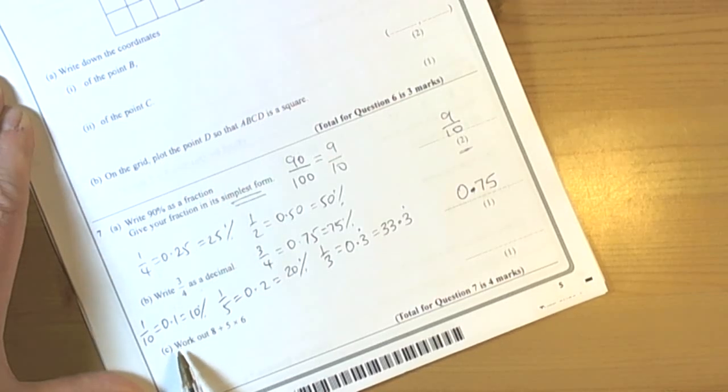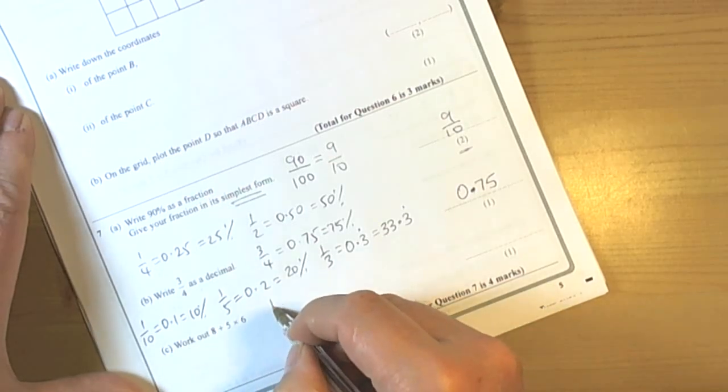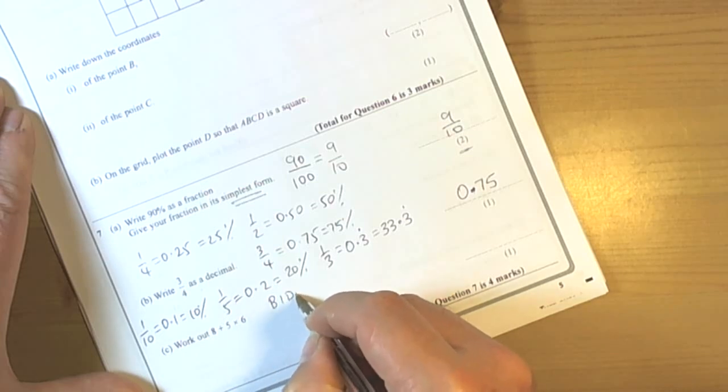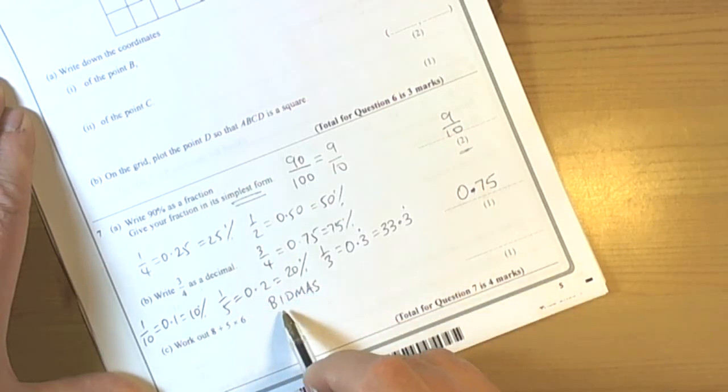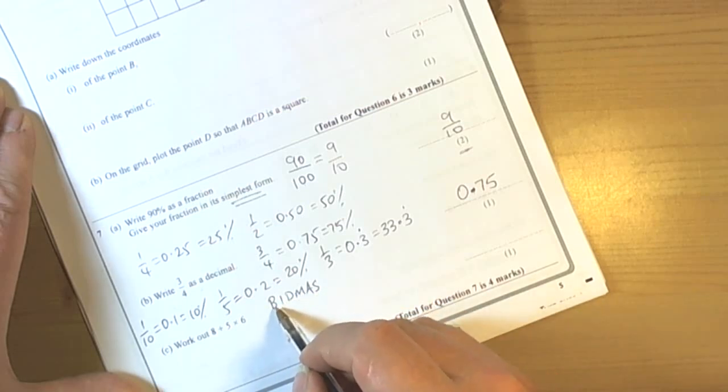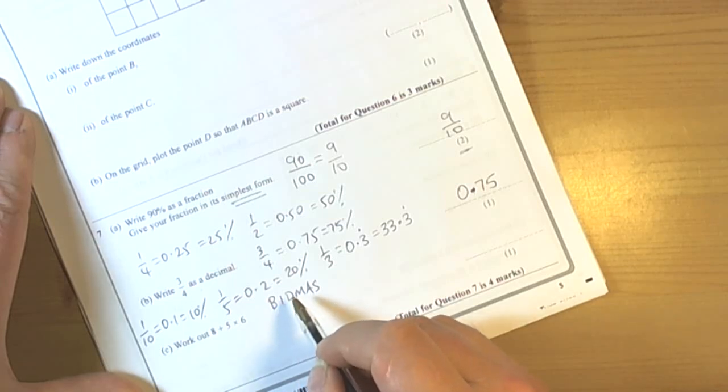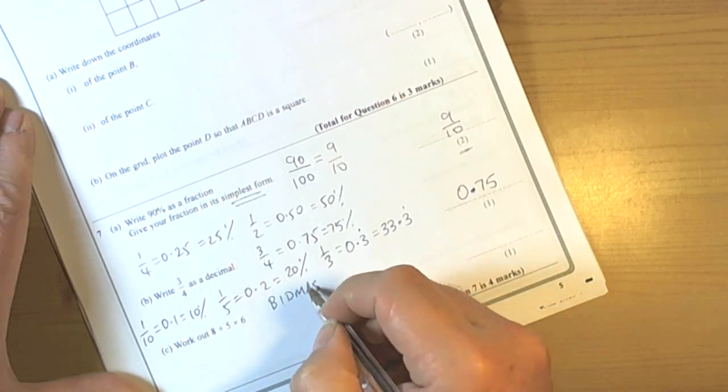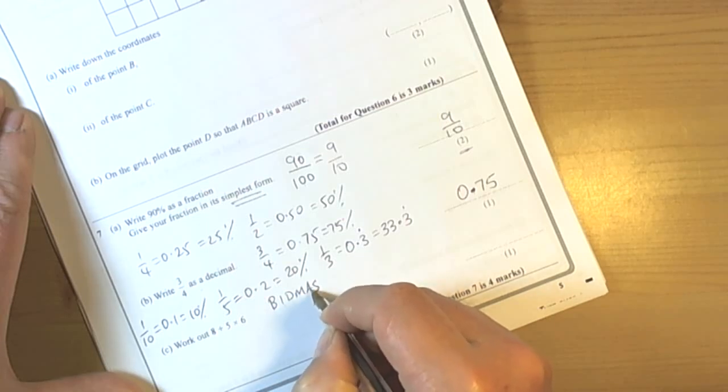The last part of this question says work out this. Well we have to remember that there is an order for operations, so a lot of you will have learnt BIDMAS. So we must remember that if we've got sums involving brackets then we look at doing the bracket bits first. If we've got sums involving indices then that would be done next and division and multiplication. Got to be careful here though because sometimes sums have just addition and subtraction in them and those you just do in the order that you see the addition and subtraction appear.